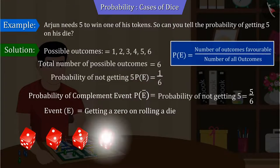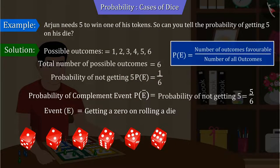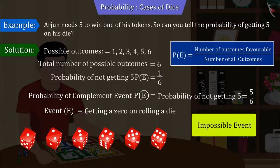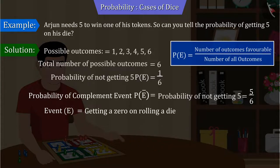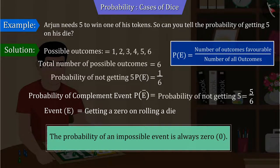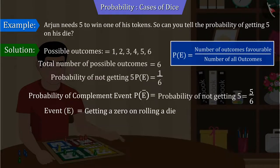You can see that there is no zero on any of the faces of the dice. So getting a zero on the dice is an impossible event. And we know that the probability of an impossible event is always zero. Hence, the probability of getting a zero in this situation will also be zero.